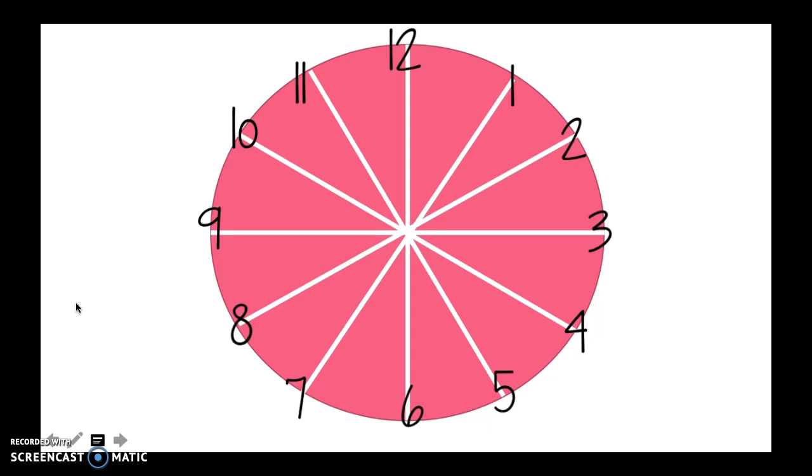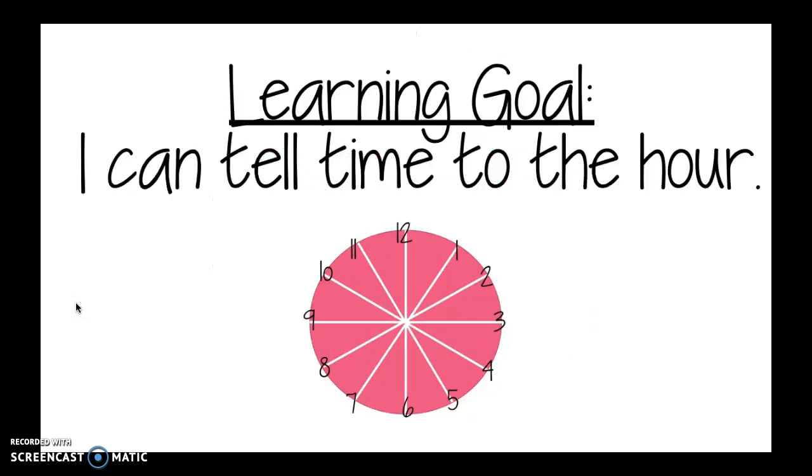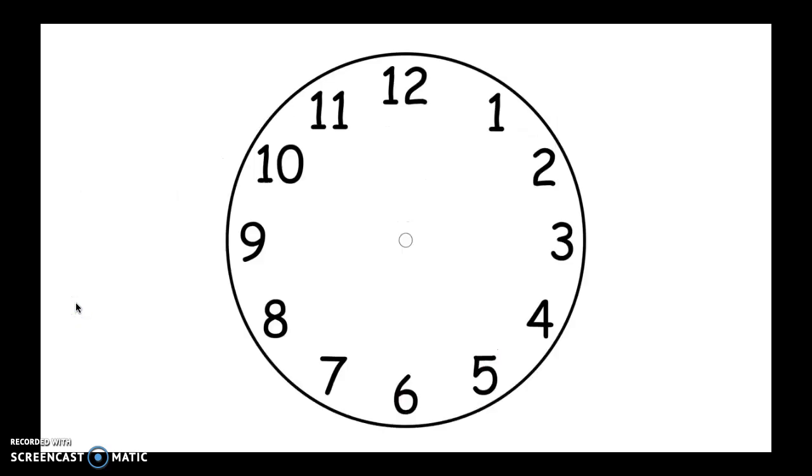Wait a minute. That reminds me of something that's in our classroom. Do you see anything in our classroom that's round with twelve different parts to it that looks really similar to this? Did you see it? If not, I'm going to show you. Because today, something in our classroom is going to help us to do our learning goal that says I can tell time to the hour. And it looks pretty similar to the shape that I made last night accidentally. It's the clock. Yeah. Is that what you said? The clock looks like the shape that I just made.